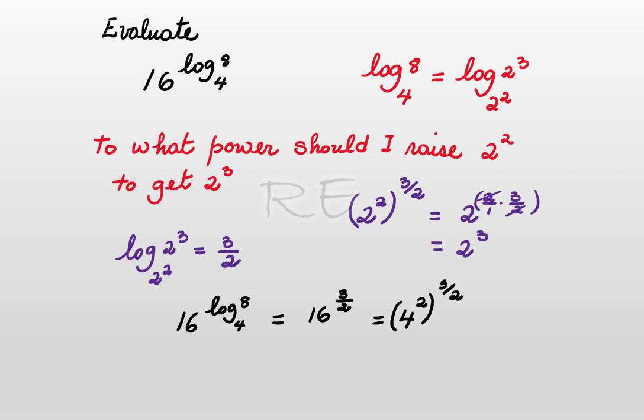Therefore, we have 4 to the second to the 3 over 2. When we multiply the exponent, 2 gets cancelled. So the answer is 4 to the third.